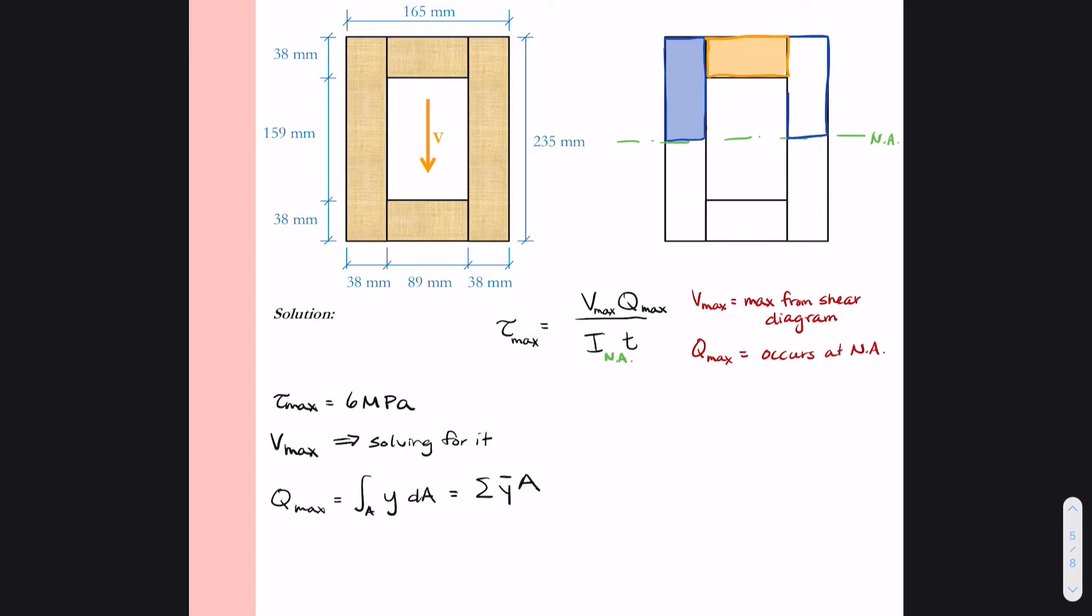But we see that that rectangle on the right is going to have the same geometry and the same distances away from the neutral axis as the one on the left. So I'm going to make that one a blue rectangle as well.